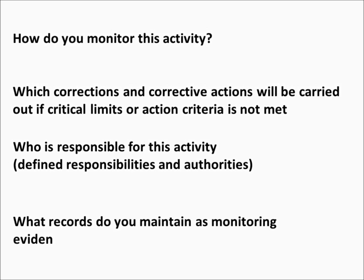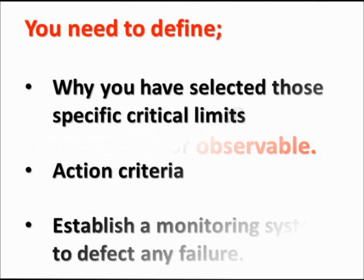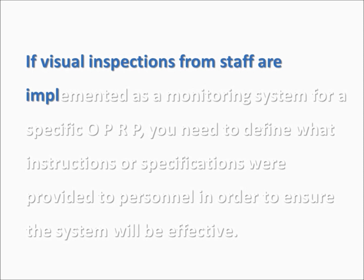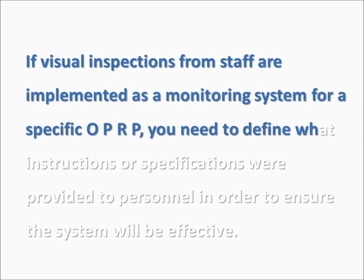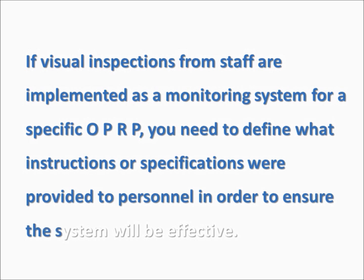What records do you maintain as monitoring evidence? As mentioned when talking about definitions, the critical limits established for CCPs must be measurable. Likewise, the action criteria defined for OPRPs must also be measurable or observable. You need to define why you have selected those specific critical limits and action criteria and establish a monitoring system to detect any failure. If visual inspections from staff are implemented as a monitoring system for a specific OPRP, you need to define what instructions or specifications were provided to personnel to ensure the system will be effective.